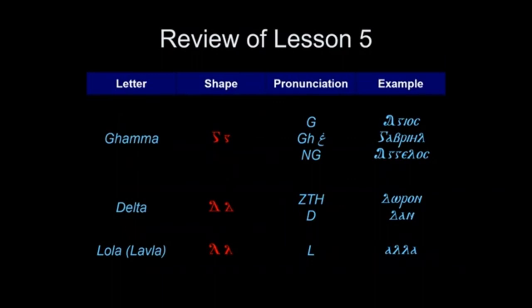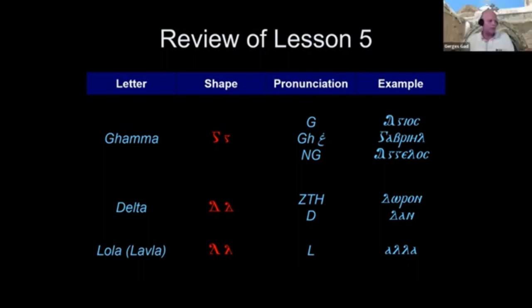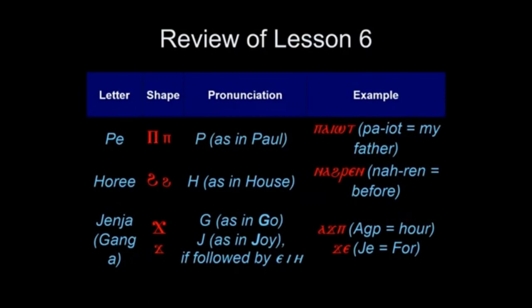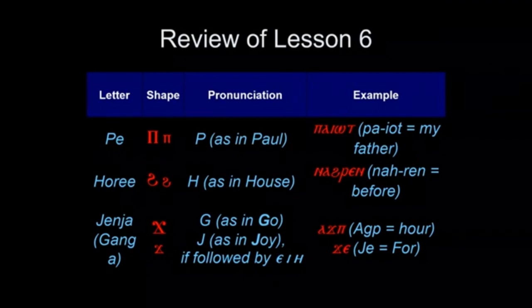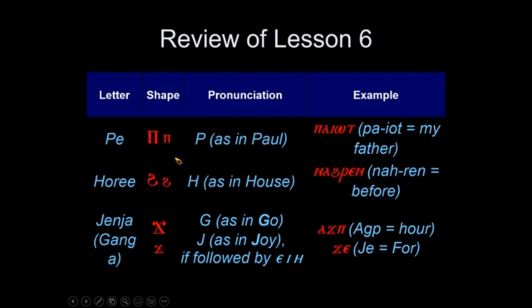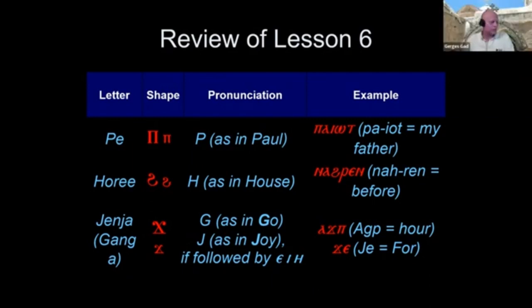Gamma sounds like G or GH. Delta sounds like D or 'diff.' Lola sounds like L. Very good, thank you. Elora, the next one. Ginger sounds like a G or a J. Okay good. P sounds like a P as in 'Paul.' Phi sounds like an H as in 'health,' and Ginger sounds like a G or a J. Thank you Laura.